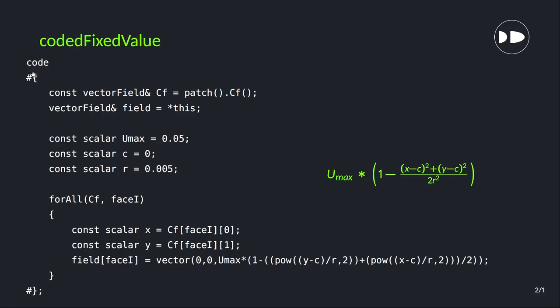So first it's code and then hash and this curly bracket - they are the standard thing. Then we start with defining a constant value for this vector field.